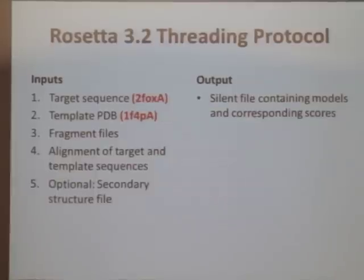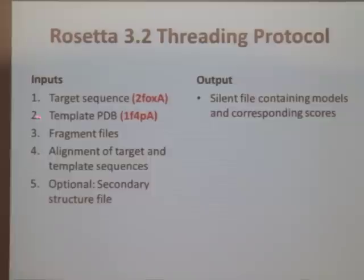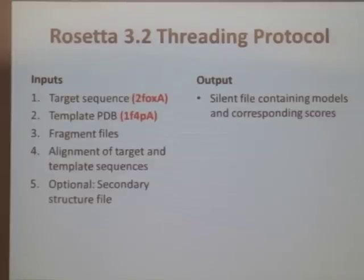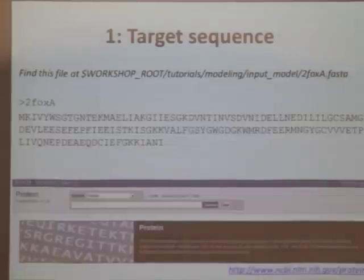With Rosetta, it will do most of these steps for you as long as you provide the correct input files. You will provide the target sequence, your template PDB, fragment files, an alignment of the target and template sequences, and optionally a secondary structure file. It outputs a silent file containing your models and the corresponding scores.